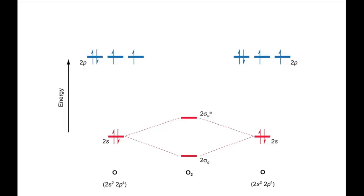The 2pz orbitals interact in a similar way. This gives a sigma g bonding orbital that's stabilised with respect to the atomic orbitals and a sigma u antibonding orbital that is destabilised.